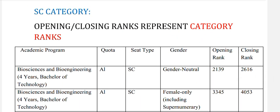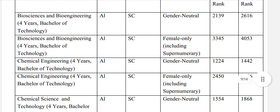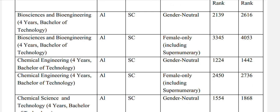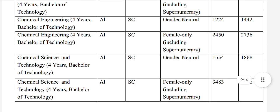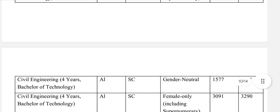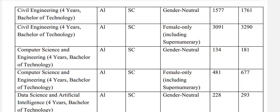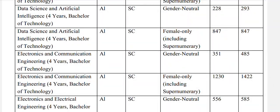Now let's see the data for SC category. The opening and closing ranks represent your category rank. Bioscience and Bioengineering, SC gender-neutral: 2616, SC female: 4053. Chemical Engineering, SC gender-neutral: 1442. Chemical Science and Technology, SC gender-neutral: 1868. Civil Engineering, SC gender-neutral: 1761. Computer Science and Engineering, SC gender-neutral: 181, and SC female: 677. Data Science and Artificial Intelligence, SC gender-neutral: 293, and SC female: 847.